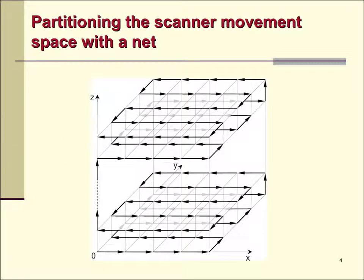Partitioning the scanner movement space with a net. At the beginning of the distributed calibration, the scanning space is partitioned with a square cell net, where the nodes correspond to the absolute integer coordinates x, y, z of the scanner.